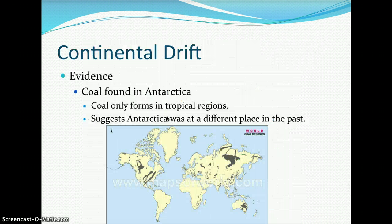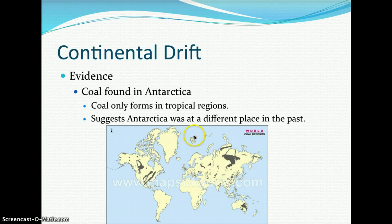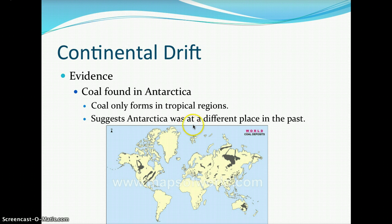Evidence for continental drift also includes coal found in Antarctica. Coal only forms in tropical regions of Earth, suggesting that Antarctica was indeed at a different location in the past.